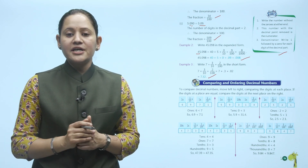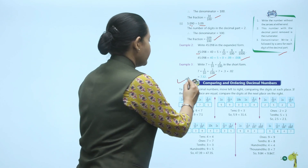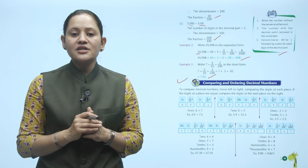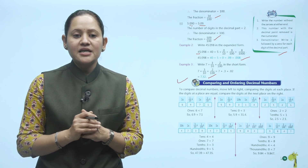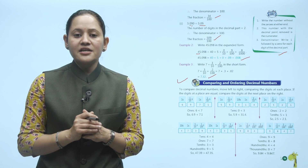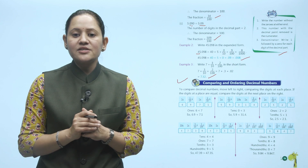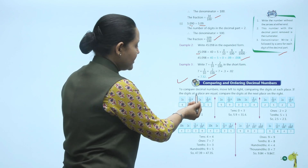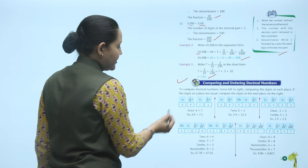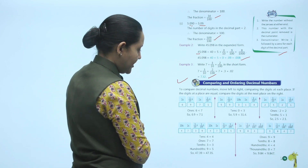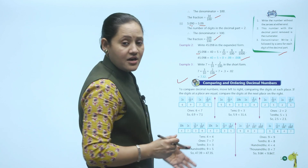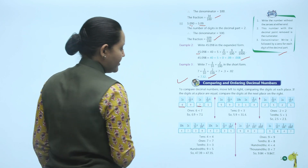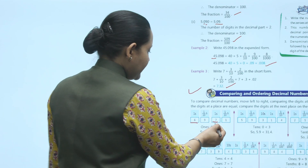Next is comparing and ordering decimal numbers. To compare decimals, move left to right comparing digits at each place. If the digits at a place are equal, compare the digits at the next place to the right. For example, comparing 6.9 and 7.1: the ones place has 6 vs. 7, and since 7 is greater than 6, we conclude 7.1 is greater than 6.9.